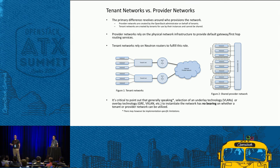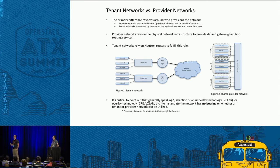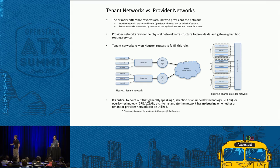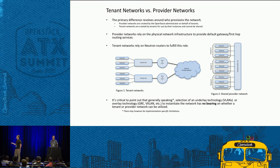Tenant networks are provisioned by tenants for their own purposes and, based on default policy settings, cannot be shared with other tenants. Another difference is that provider networks rely on the physical network infrastructure for default gateway or first-hop routing services, whereas tenant networks rely on a neutron router, which must be attached to a provider network marked as external to reach the physical network. On the left I'm depicting a tenant network topology with two tenants; on the right, a shared provider network where three tenants share a common Layer 2 network.